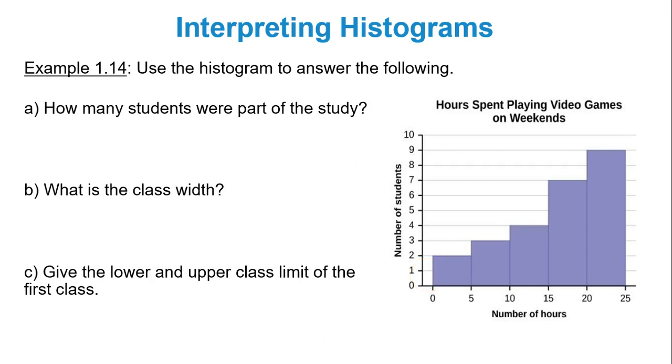Lastly, let's interpret a histogram. I'm going to give you a histogram and you have to find out some information about it. So how many students were part of the study? The study was trying to find the hours spent playing video games on weekends. So I have number of hours on the x-axis and number of students on the y-axis. How many students were in the study? We'll add up the frequencies of each of the bars. Remember, the bars represent frequencies, number of students. So you had 2, 3, 4, 7, 9. So add all these together. And you're actually going to get 25.